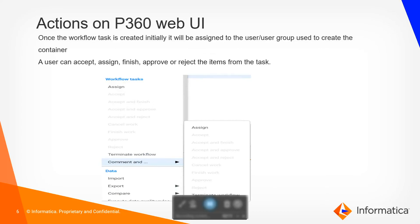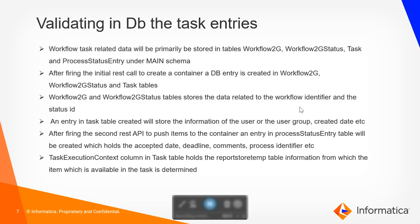Once the item is pushed, the task will be available in the UI and the user can perform different sets of actions like assign, accept, finish, approve, or reject. The accept action captures the item from the particular group task to the user's personal bucket. Assigning tasks allows a user to assign the item to different user groups or users. Finishing and approving means once the item has verified data, the user of the task can approve or reject based on the data set.